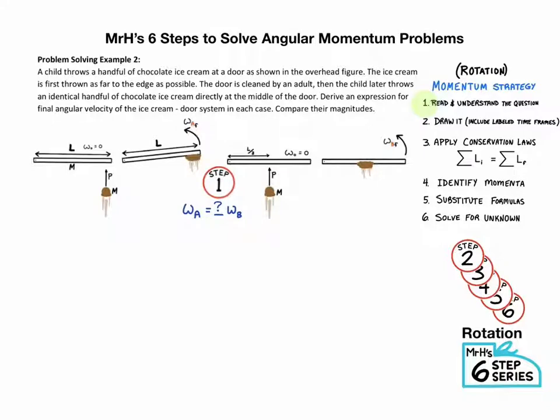All right. So step one, read and understand the question. We've got a picture and a question. Step two, draw a picture. Step three, apply the law of conservation of angular momentum. It looks like it says Eli Elf. And that's an easy way to remember it. So we always write this down. Step three always looks the same.